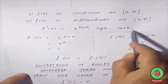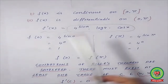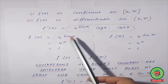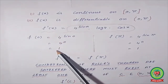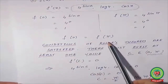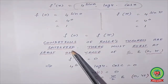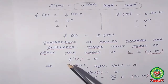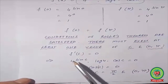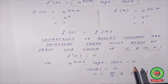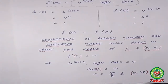Now put the endpoint values: f(0) = 4^(sin 0) = 4^0 = 1. Similarly f(π) = 4^(sin π) = 4^0 = 1. So f(0) = f(π), meaning all three conditions of Rolle's Theorem are satisfied. Therefore there must exist at least one value c in (0, π) such that f′(c) = 0. So 4^(sin c) · log 4 · cos c = 0, giving cos c = 0, so c = π/2. Since π/2 belongs to (0, π), Rolle's Theorem is verified.